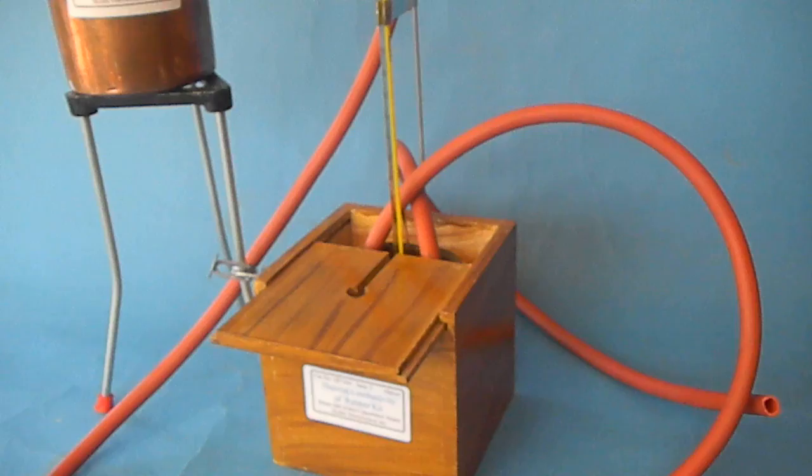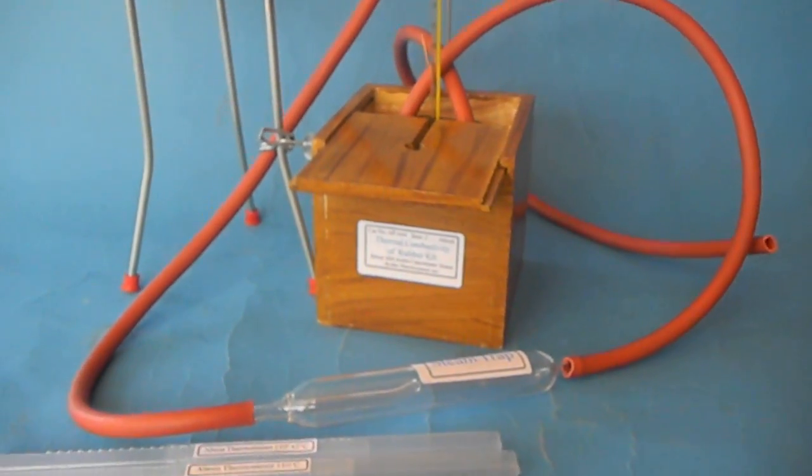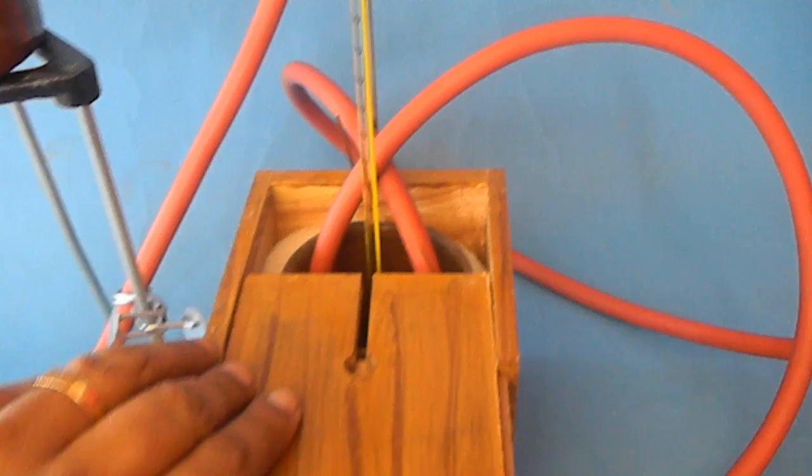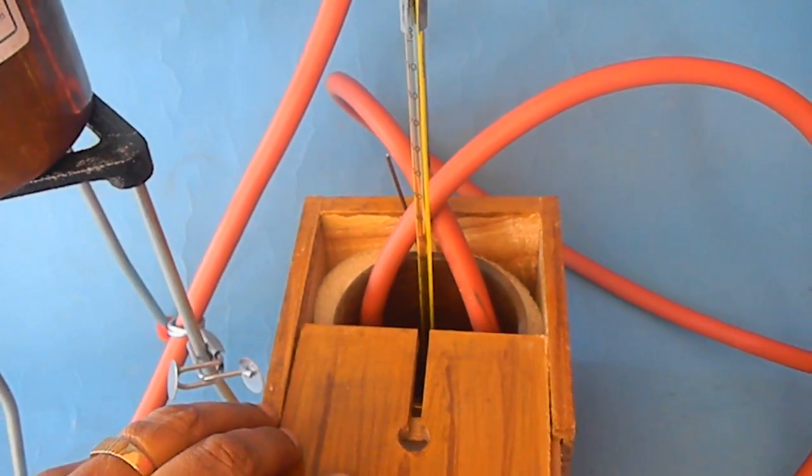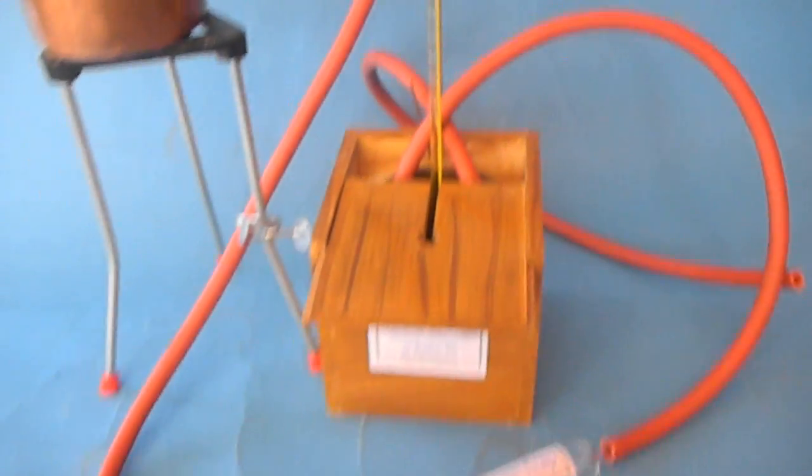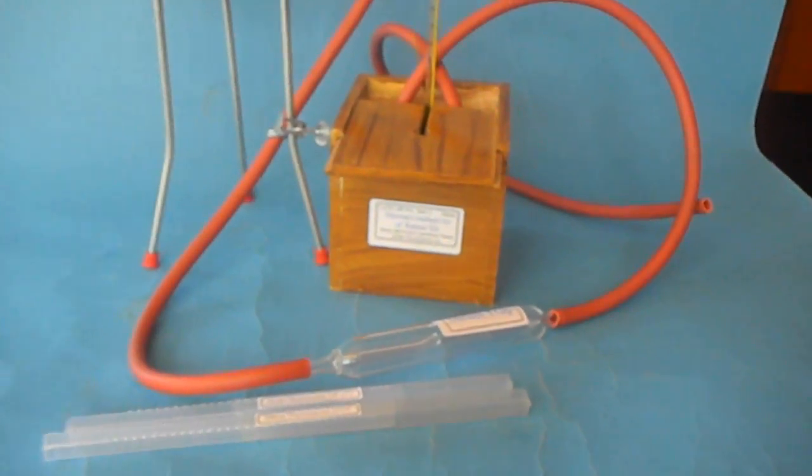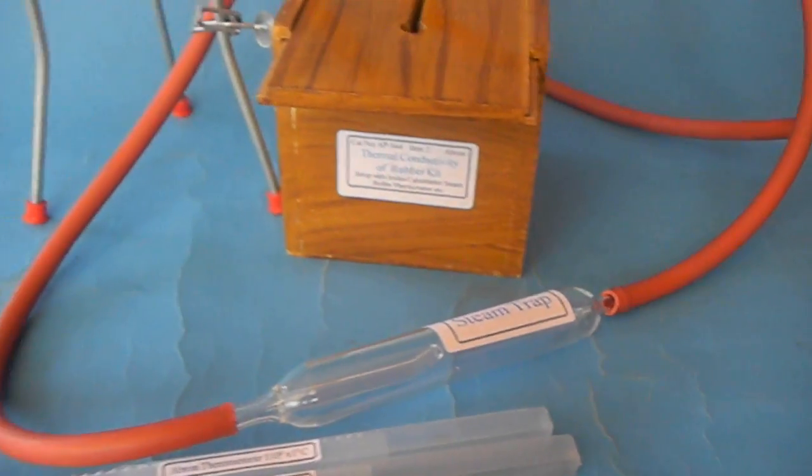You can connect the thermometer and rubber tube through the calorimeter inside, and you can put water inside so that the heat passing through the rubber tube will change the temperature. There is a steam trap on the way.